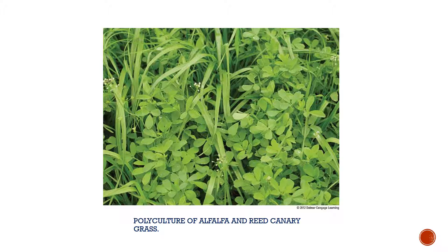This is a picture of alfalfa and canary grass — a polyculture because there are two grasses growing together. This is used really commonly in dairy farms. This grass may or may not be harvested together or separately. Depending on what kind of feed program the dairyman has going on, they will either harvest it as hay or graze it as well.